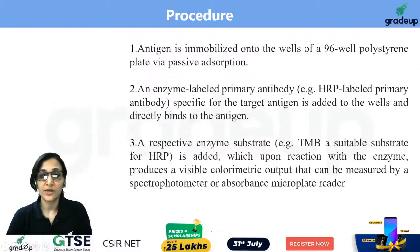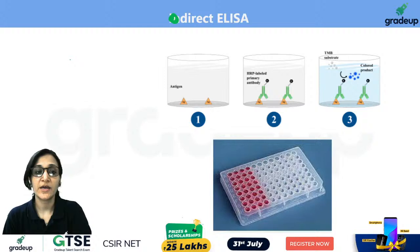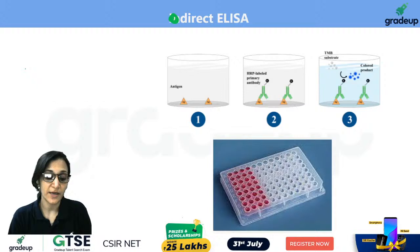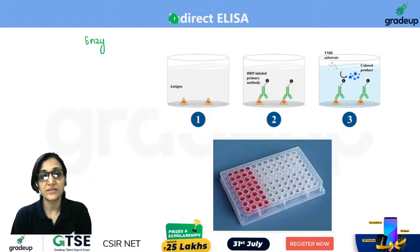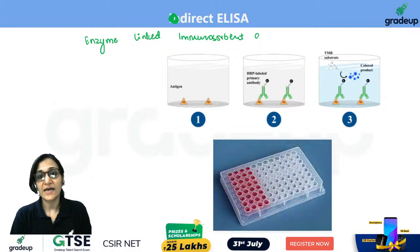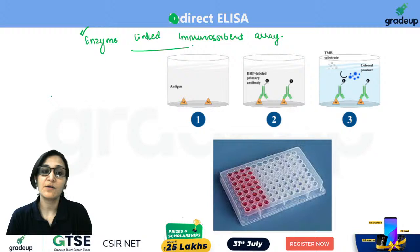First we'll see what ELISA is. There are four types, but before that let's see what the full form of ELISA is. Can someone write it in the chat box? It is Enzyme Linked Immunosorbent Assay. Using this technique, we can identify antigen or antibody.